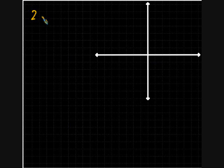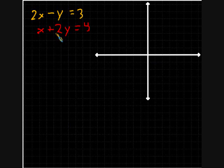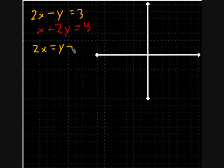The next system of equations that we're going to graph looks like this: 2x minus y equals 3, and x plus 2y equals 4. You'll notice these are in standard form, whereas the other two were in slope-intercept form. So to graph these, we'll convert to y equals mx plus b. We'll rearrange to get y equals 2x minus 3 — there's one equation.